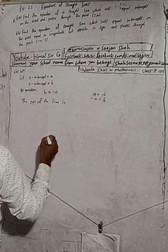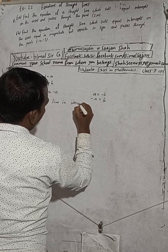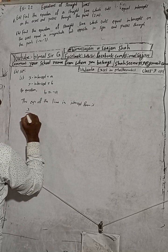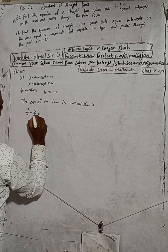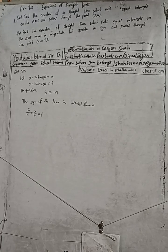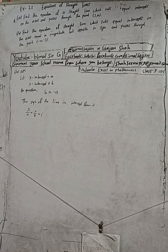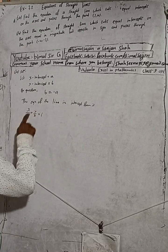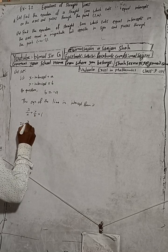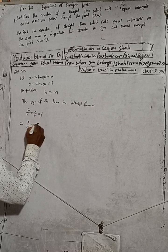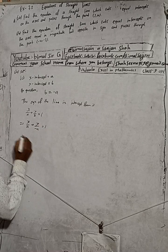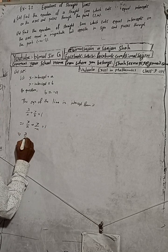The equation of the line in intercept form is: x/a + y/b = 1. Now, substituting b = -a in place of b, we get: x/a + y/(-a) = 1.